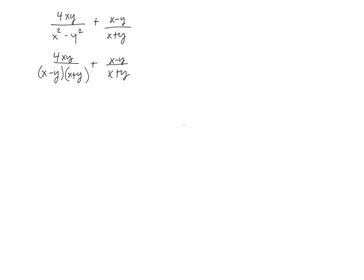Okay, now when I look, this is common to each of them, but this one has an x minus y, this one doesn't. So I'm going to take the second one and multiply it by an x minus y on the top and on the bottom.